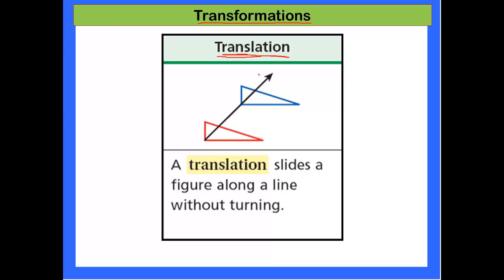A translation is a slide. Basically, we take a shape and it slides without any sort of rotation along a fixed line. For example, if I had points A, B, and C, it would slide to a new position that we would call A prime, B prime, and C prime.